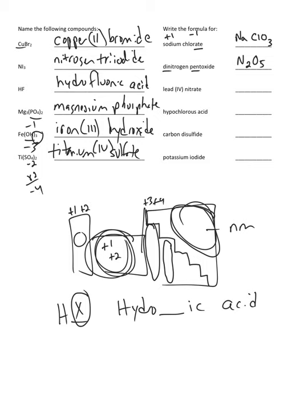Lead(IV) nitrate: lead is Pb. The 'four' tells me it has a charge of plus four. Nitrate ends in '-ate,' meaning it contains oxygen — nitrate is NO3 with a charge of negative one. Since the charges do not balance, we cross-multiply: we need four nitrate ions (each negative one) to balance the one lead at plus four, giving Pb(NO3)4.